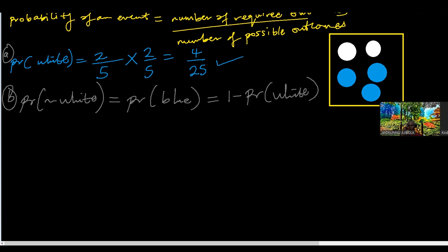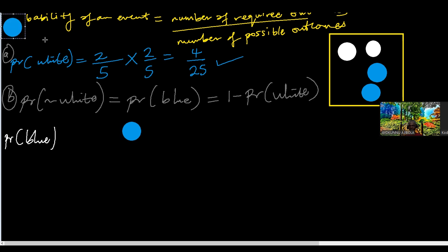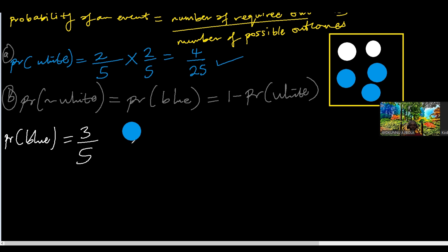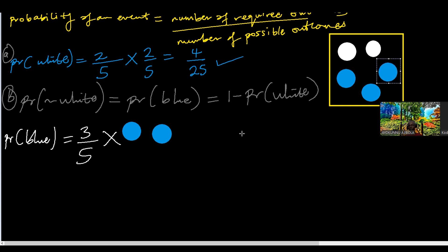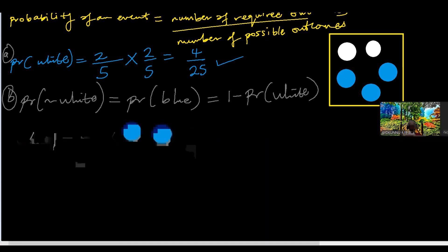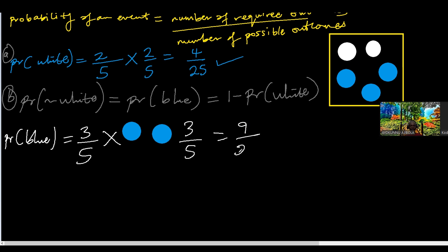Probability of blue first. If I want to find the probability of both blue, it means I pick the first blue ball with replacement, then replace it. The chance of the first one is three possible blue balls out of five total. Then if I want to pick the second blue, the chance is still three out of five because I replaced the first one. So multiplying, I get three times three equals nine, and five times five equals 25 — giving nine over 25.